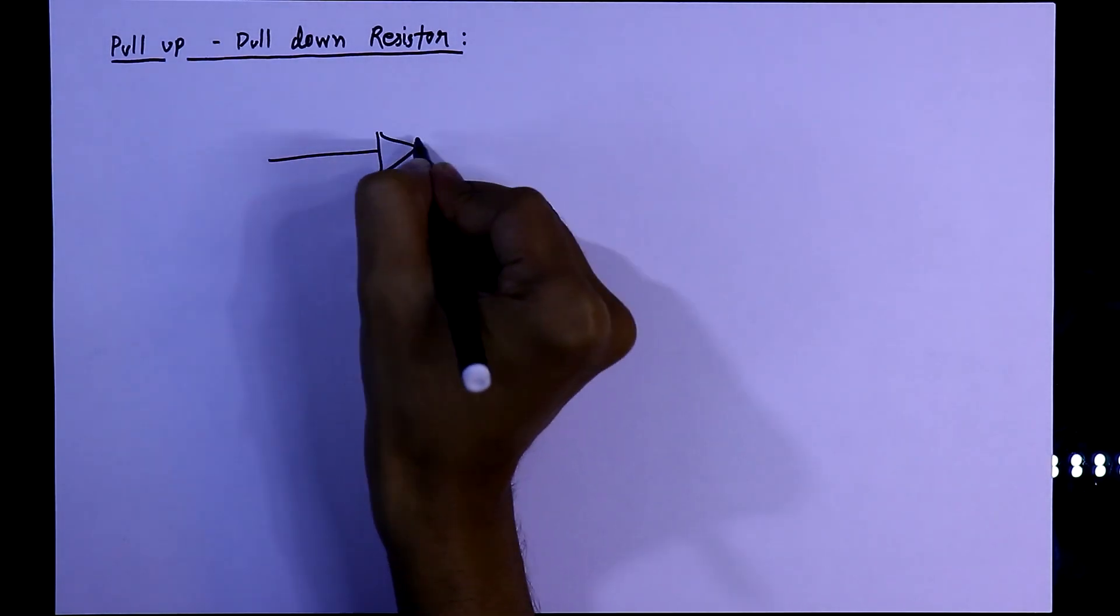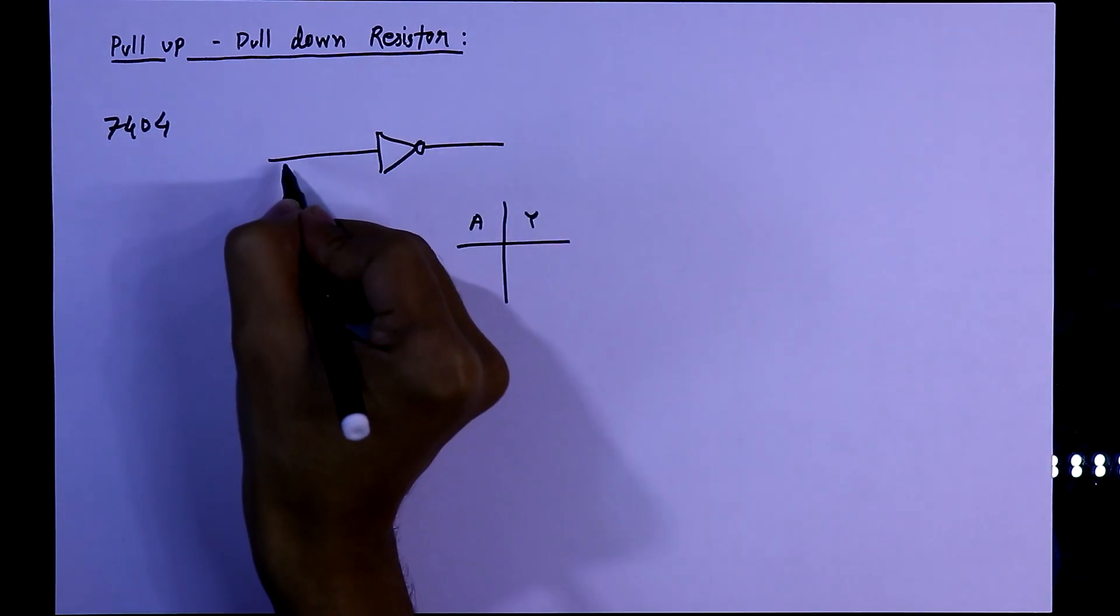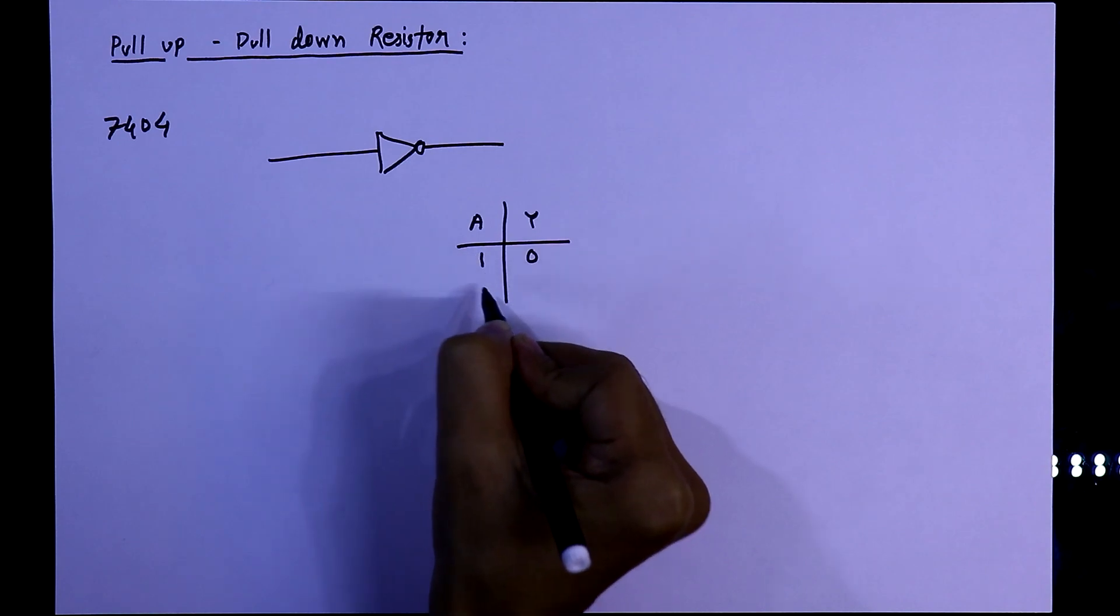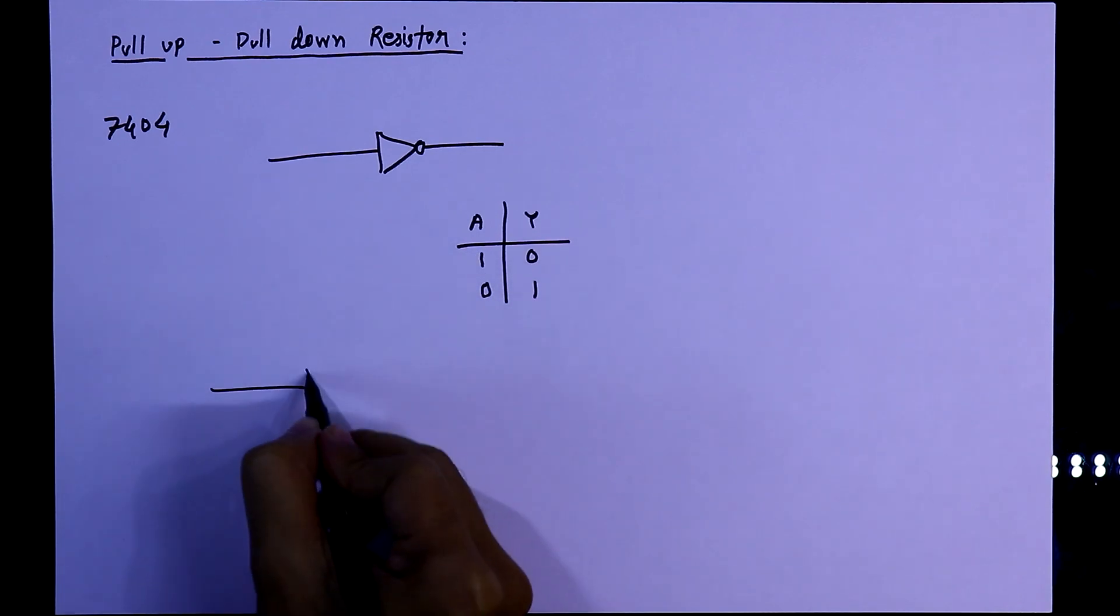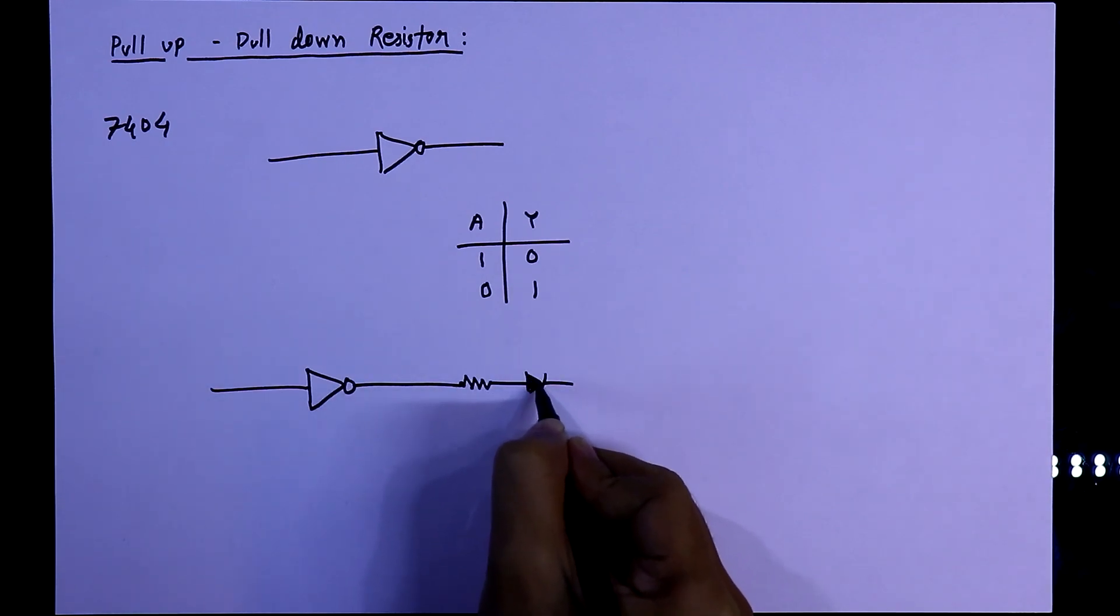For the example I will take NOT gate IC 7404. When input is 1, output will be 0, and when input is 0, then output is 1. I will connect a resistor and LED so that we can see the output.